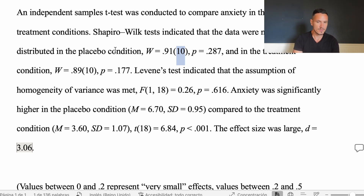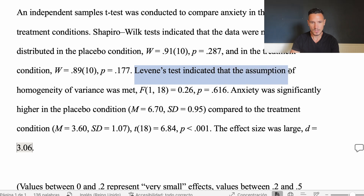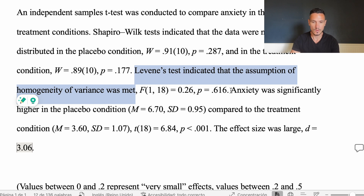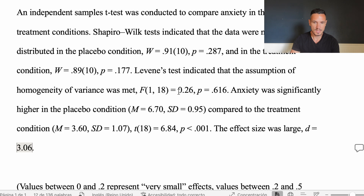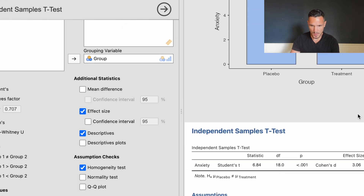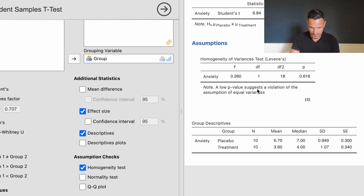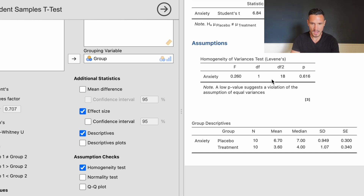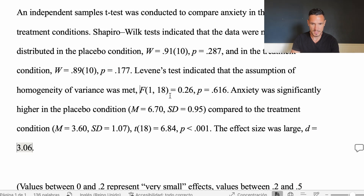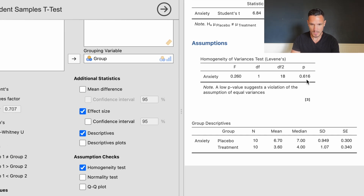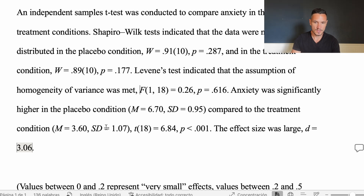Now let's look at how to report the homogeneity of variance test — that's Levene's test. I've stated that Levene's test indicated the assumption of homogeneity of variance was met. The F value from the homogeneity of variances table is 0.26, with degrees of freedom of 1 and 18 — shown in parentheses — and a p-value of .616. That's how you report the results of the two assumption checks.